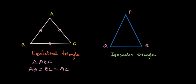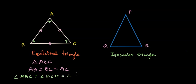One more interesting property of an equilateral triangle is that all the angles are equal as well, and they are all of the same measure — they are all 60 degrees. So angle ABC is equal to angle BCA is equal to angle CAB, and all are equal to 60 degrees.